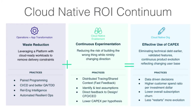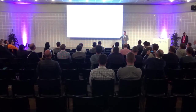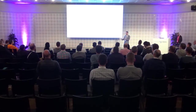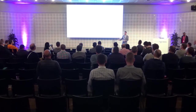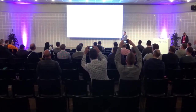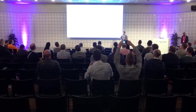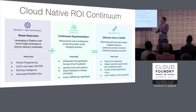Within Pivotal and the companies we've worked with, we've seen this cloud-native ROI continuum. It starts with waste reduction — things like paired programming, finding a defect during development is a lot cheaper to fix than in production, plus platform consolidation and automation. You couple waste reduction with continuous experimentation, and that gives you a feedback loop. It lets you look at service level indicators and assess customer feedback so you can identify if you're building the right thing.